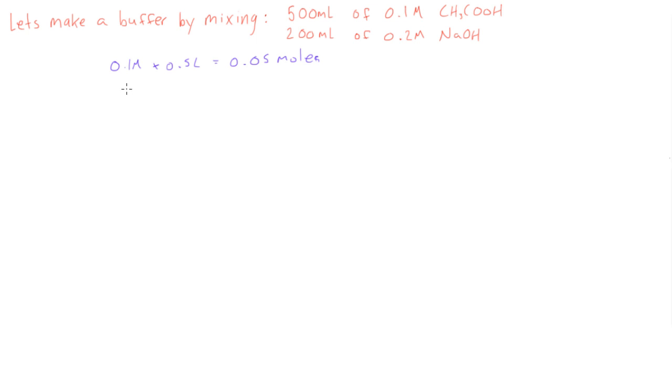Okay, cool. So let's do the next one. We have 0.2 molar, moles per liter, times 0.2 liters and that's going to give us 0.04 moles of NaOH.